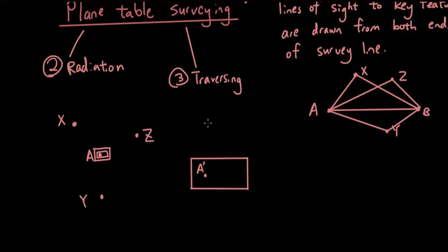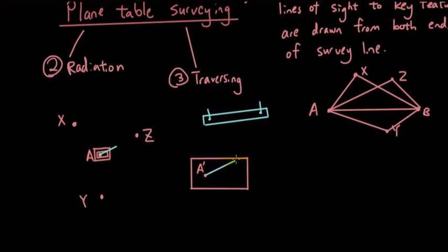Using the sight rule — a ruler with a pin on both ends that helps you aim at certain points — you aim at point Z and draw a line across the paper toward Z. Then you do the same to point X and to point Y, so there are lines drawn from A-dash toward each of these points.